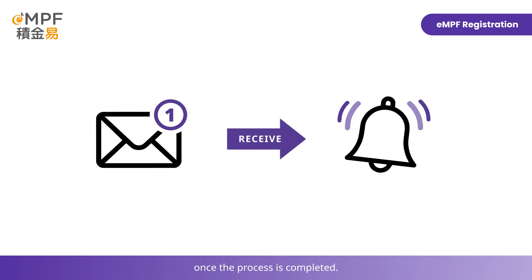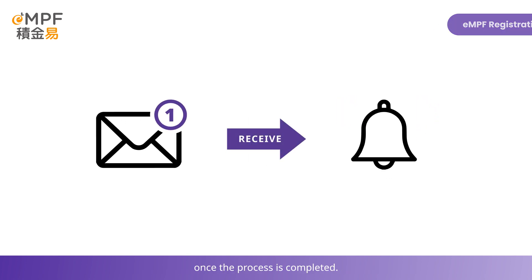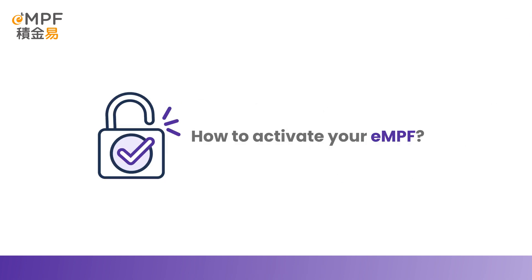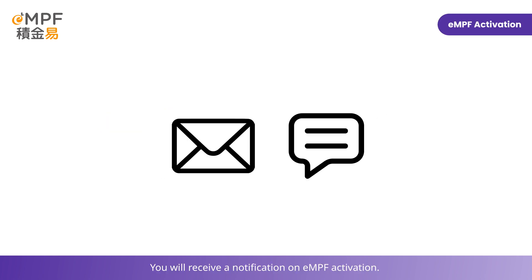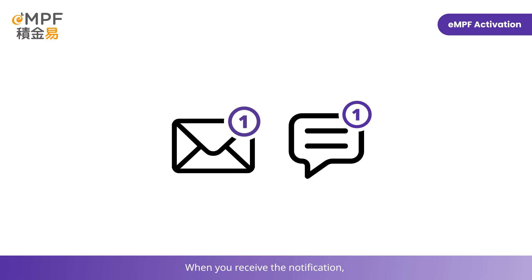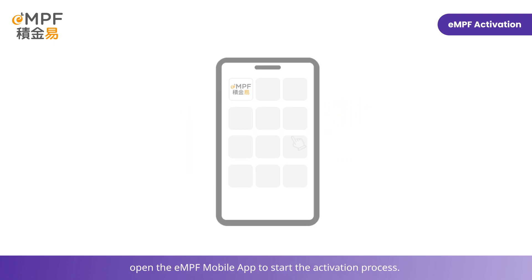Your EMPF registration application has been successfully submitted. You will receive an email or SMS notification within two working days once the process is completed. After the registration application has been approved, you will receive a notification about EMPF activation.